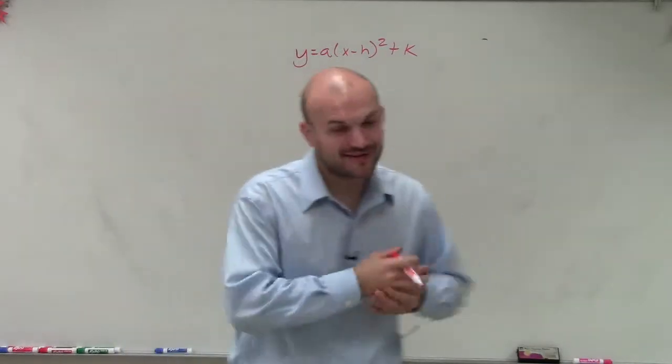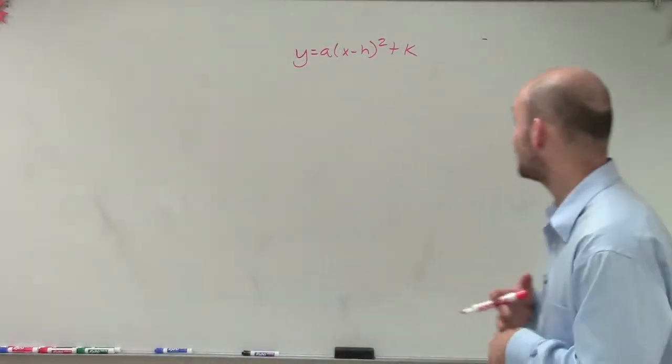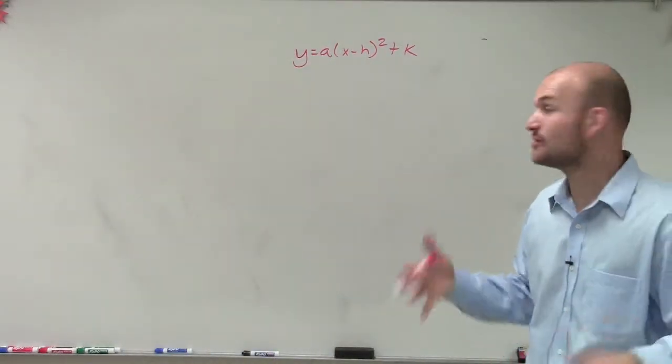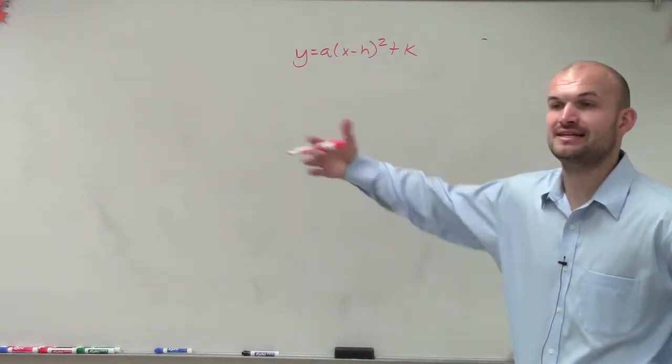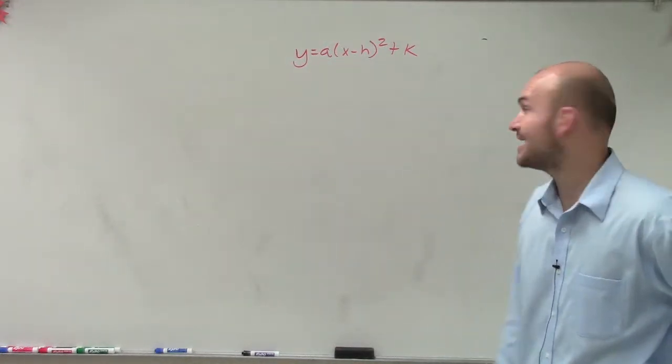Welcome. So what I have is y equals a times x minus h squared plus k. And this is what we call our vertex form. Sometimes we call it standard form. I like to call it vertex form and leave the general form as my standard form.